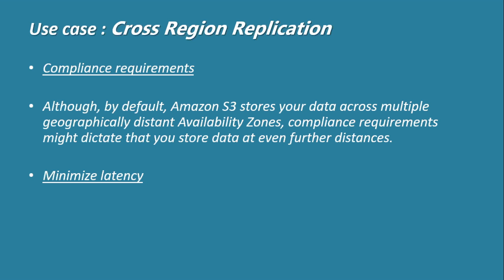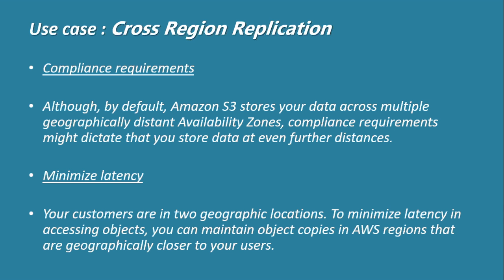The second use case is minimizing latency. There may be a situation where your website or data is being accessed by users in different countries. To minimize latency so that your website or data is accessible to users in less time, you can enable cross-region replication and drop your data onto different AWS regions. There are other use cases as well, but these two — compliance and latency — are the main ones.